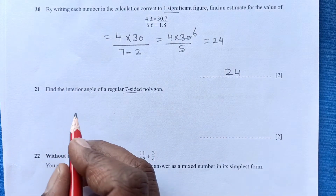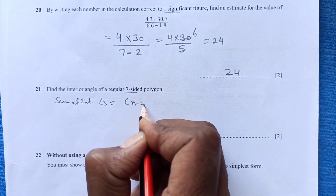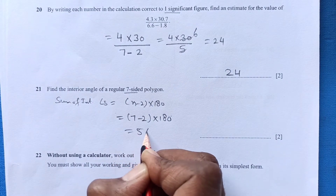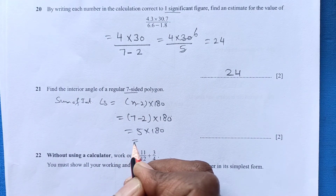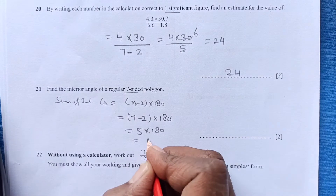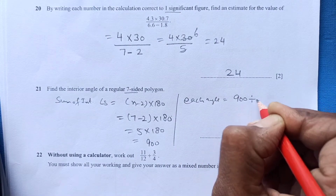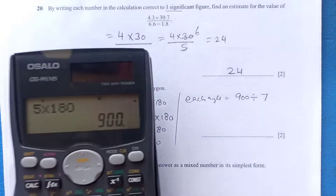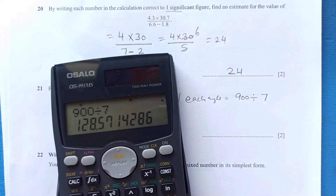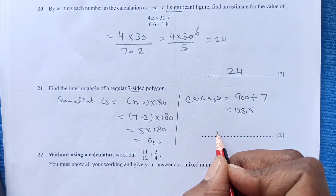Question 21: Find the interior angle of a seven-sided polygon. The sum of interior angles is (n − 2) × 180. With n = 7: (7 − 2) × 180 = 5 × 180 = 900 degrees. Each angle is 900 ÷ 7 = 128.5, which we can write as approximately 129 degrees.